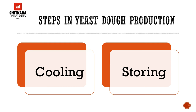Do not cool bread in a draft because the crust may crack. For storing, breads to be served within 8 hours may be left on racks. For longer storage, wrap cooled breads in moisture-proof bags to retard staling. Bread must be thoroughly cooled before wrapping or moisture will collect inside the bags. Wrapping and freezing maintains quality for longer periods. Refrigeration, on the other hand, increases staling. Hard-crusted breads should not be wrapped unless they are frozen because the crust will soften and become leathery.